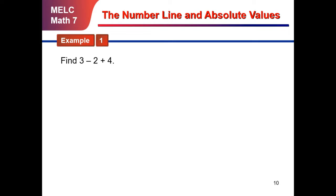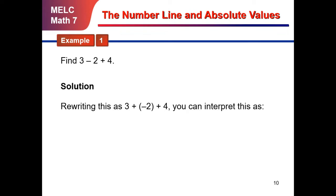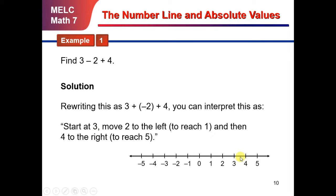Let's try an example: find 3 minus 2 plus 4. The solution: we rewrite it as 3 plus negative 2 plus 4 so we can interpret it easily. Start at positive 3. Since we are adding negative 2, we move 2 places to the left, reaching positive 1. Then, plus 4 means we move 4 places to the right. From positive 1, we move 4 places to the right and land at positive 5. So the correct answer for 3 minus 2 plus 4 is equal to positive 5.